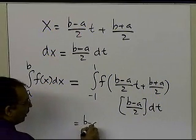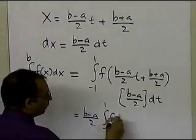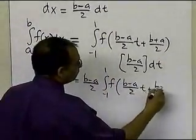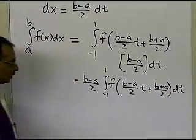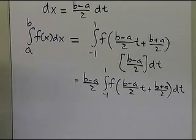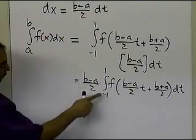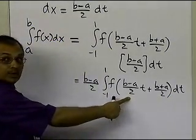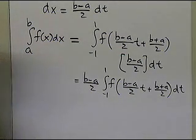So I'm going to take the b minus a divided by 2 outside, and I have the integral going from minus 1 to plus 1 of the value of the function at that argument times dt. So what that means is that in order to convert the integral going from a to b to an integral going from minus 1 to plus 1, the argument has to be changed accordingly for the function, and you have to multiply by the weight b minus a divided by 2.